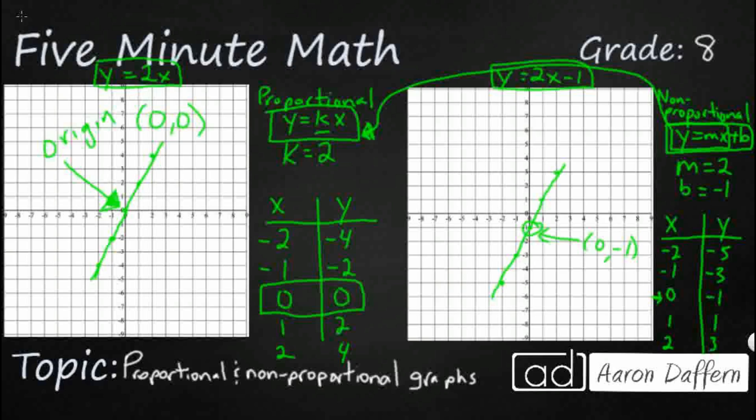So non-proportional relationships don't go through the origin. That's the main difference. And if you want to just visually see the difference, look to see, does that line go through the origin? If it does, it's proportional. If it doesn't, it's non-proportional.